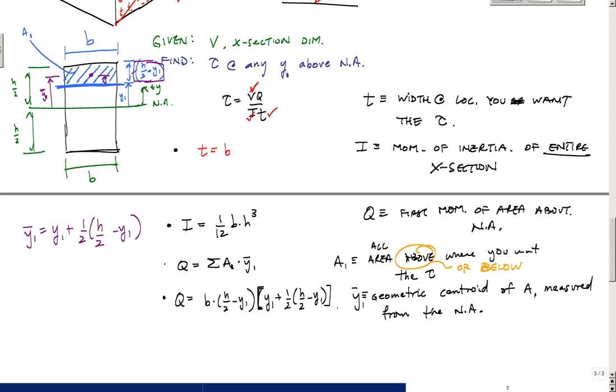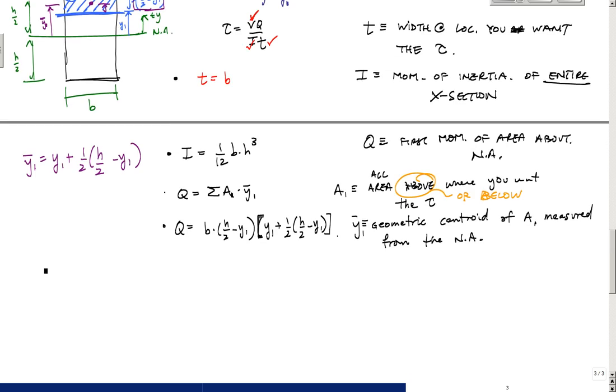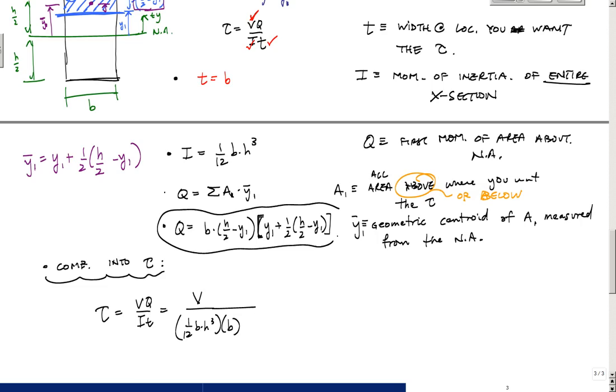Now I just put it all into the transverse shear formula. So combine into tau. I would get tau is equal to VQ over It, which is V, some value V that I don't know, times 1/12 base times height cubed over here, times the width at the location I'm interested in, which is b also, times this whole mess right here, which is b times h over 2 minus y1, times y1 plus 1/2 times h over 2 minus y1.